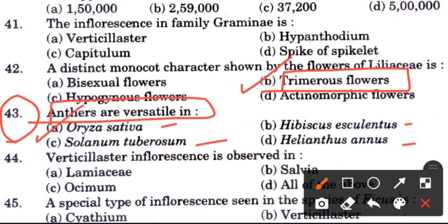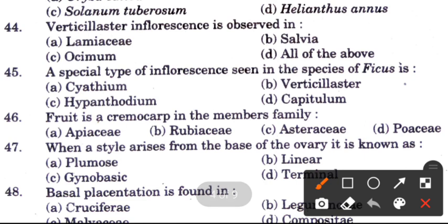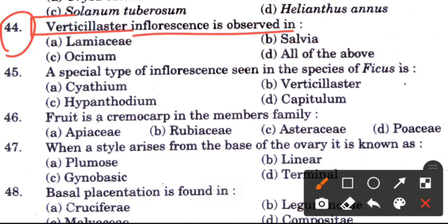Question 44: Verticillaster inflorescence is observed in — options are Lamiaceae, Salvia, Ocimum, or all of the above. The answer is A, Lamiaceae.